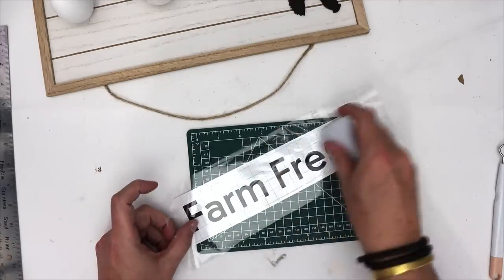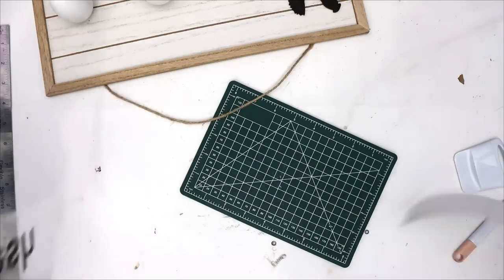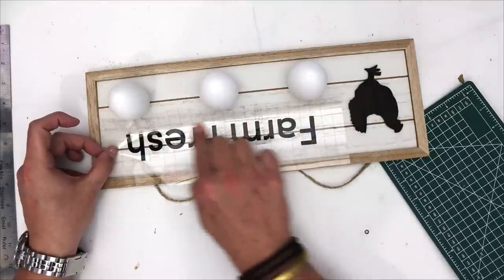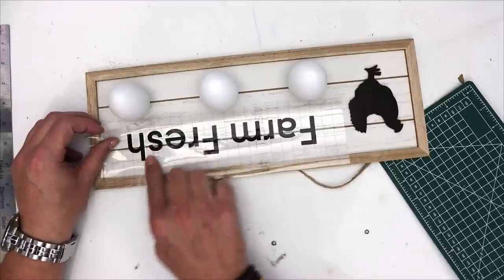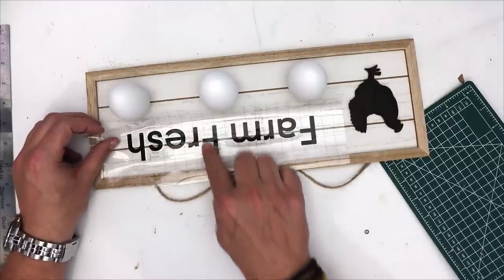And I just thought that it would be great. Now I did not like that blank space at the top, so I took out my Cricut Joy and just made a very quick farm fresh kind of a sign.